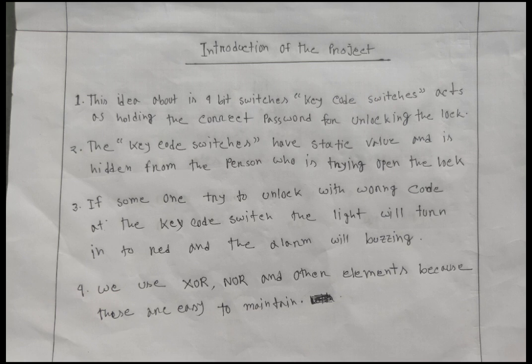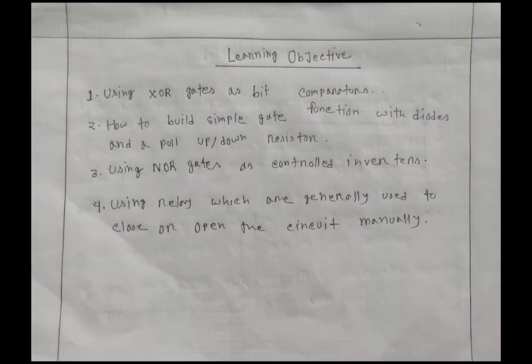Introduction of the project. This idea is about a 4-bit switch which acts as holding the current password for unlocking the lock. The key code switch has a static value and that is hidden from the person who is trying to open the lock. If someone tries to unlock the lock with the wrong passcode, then the light will turn red. Here we use XOR and NOR gates and many other elements to make it easily maintainable.